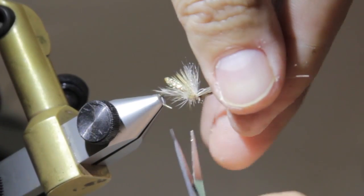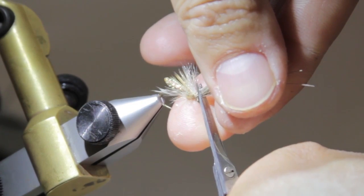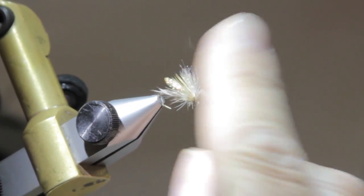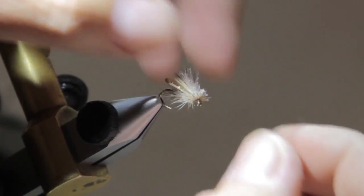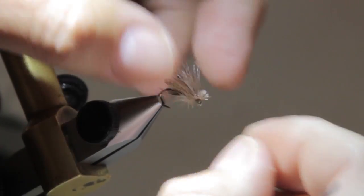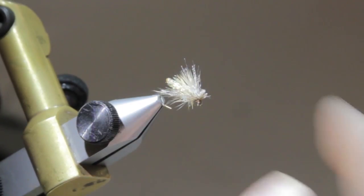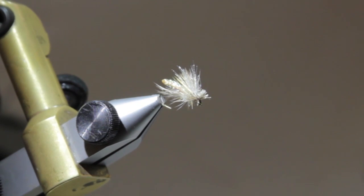Pull this little thing forward and cut this down to a little tuft. And there you have a Sylvie's visible caddis.